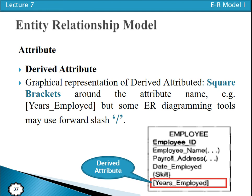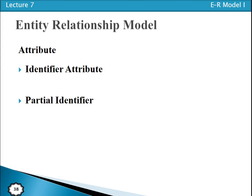That is all about the attributes. Here we discussed the different types of attributes: simple attribute, composite attribute, single value attribute, multi-value attribute, stored attribute, derived attribute, identifier, and partial identifier. In the next video, we will discuss the concept of relationships between different types of entity types. Thanks for watching the video.